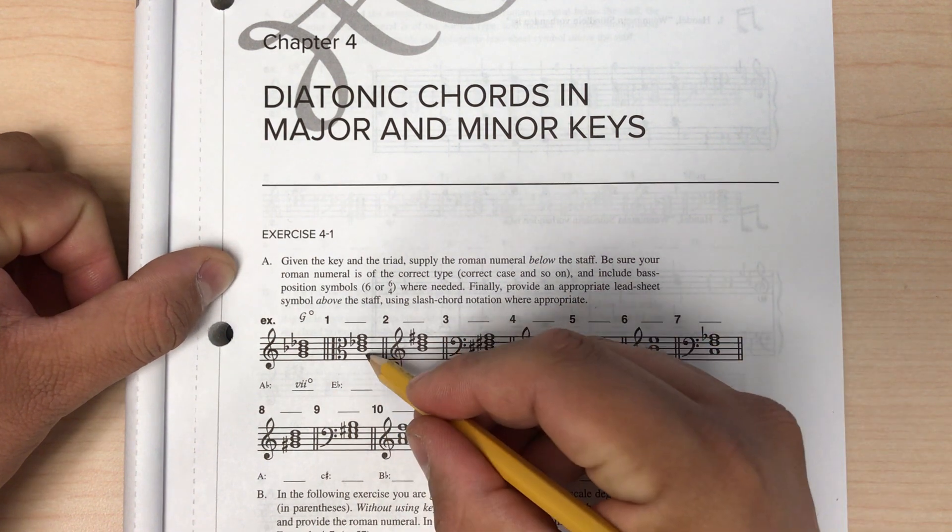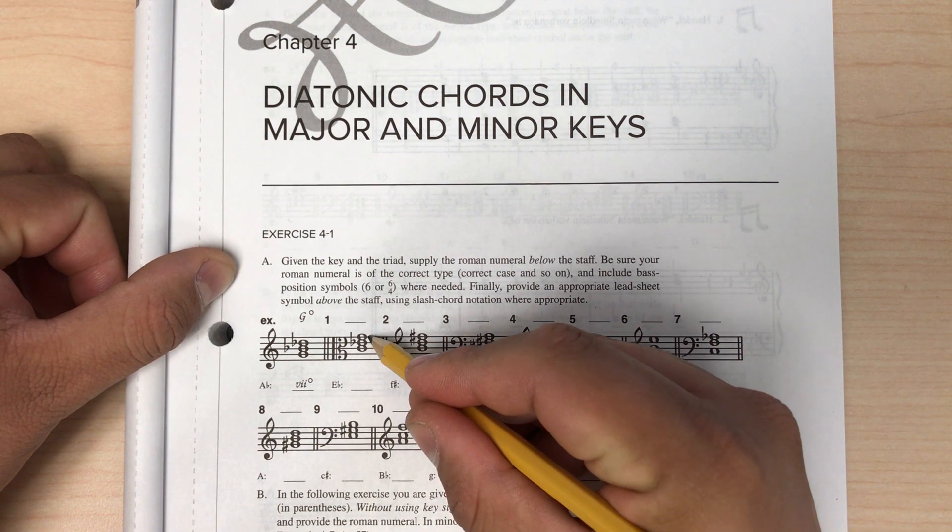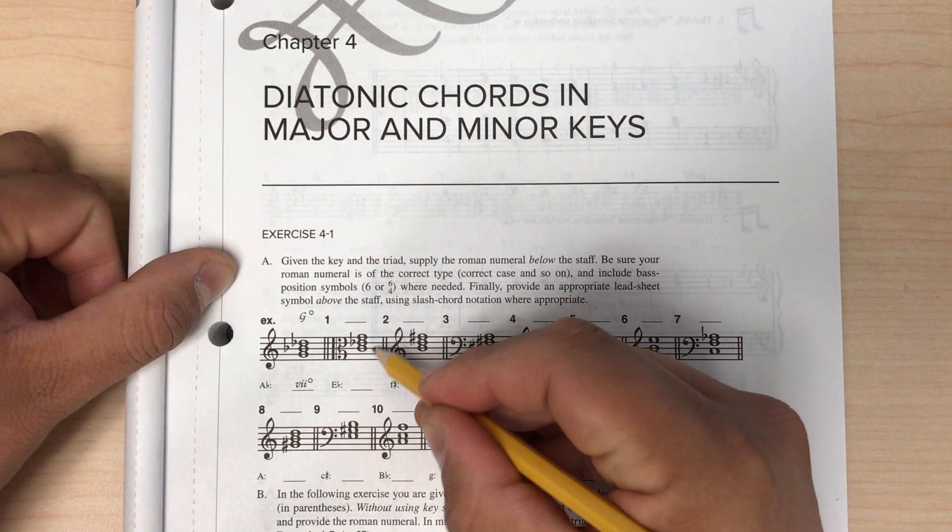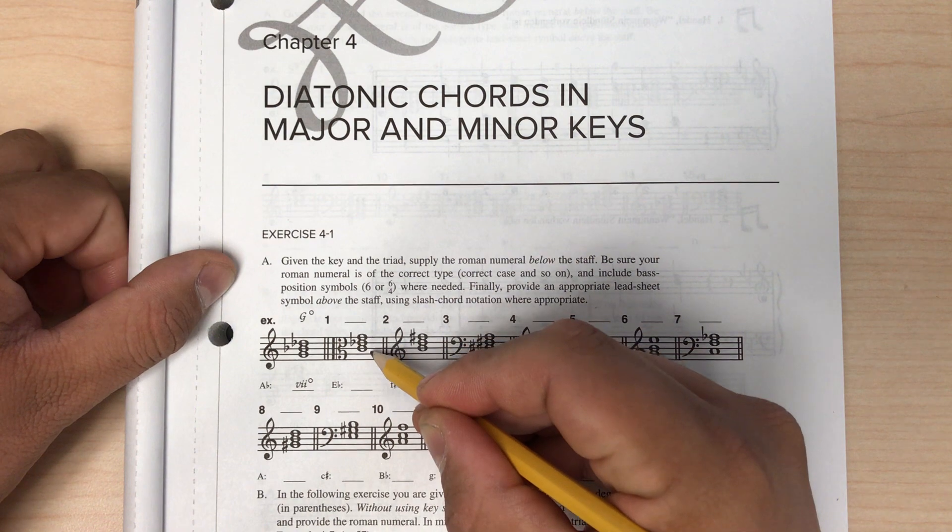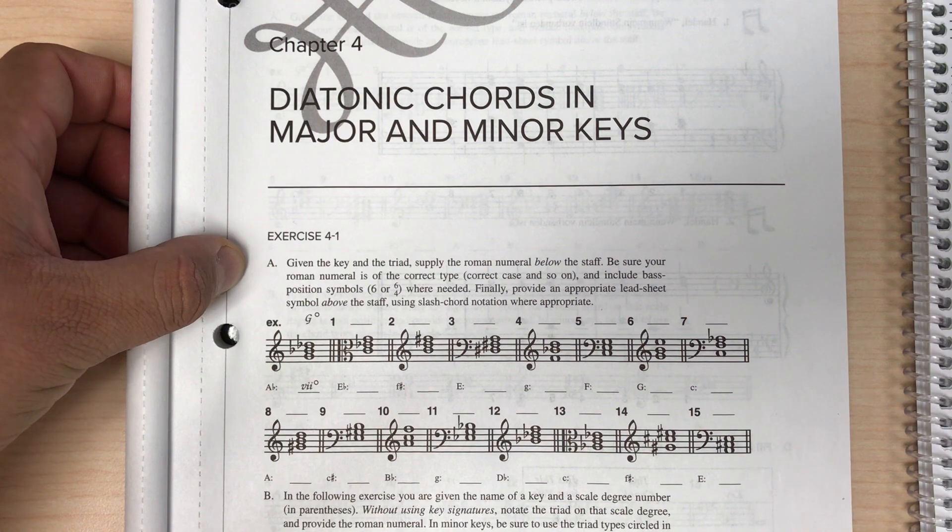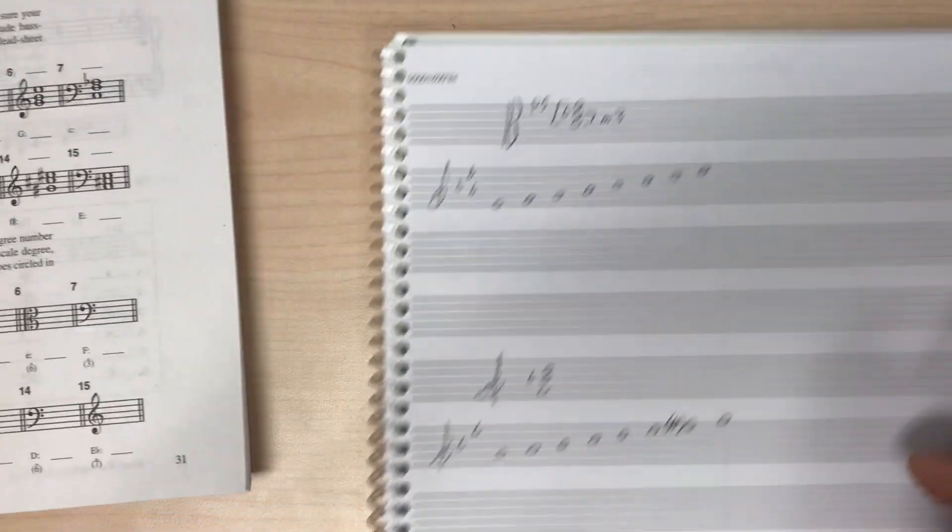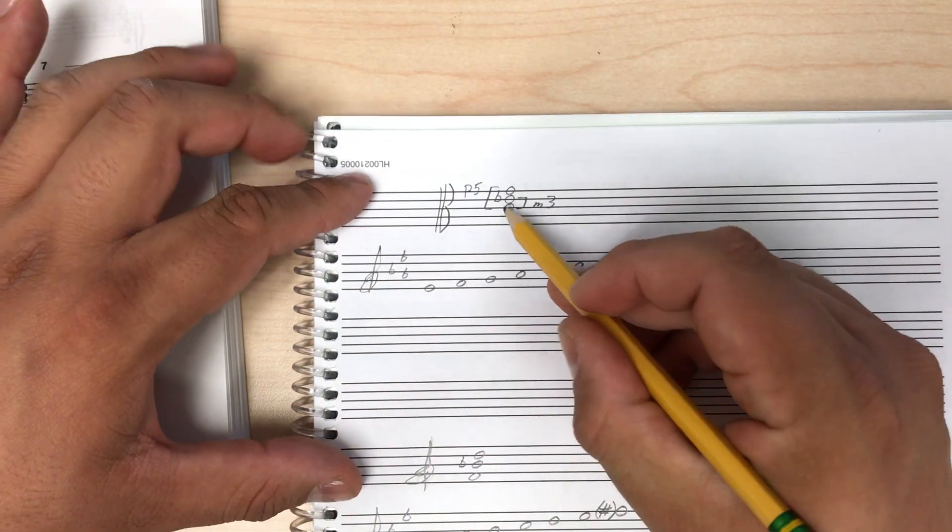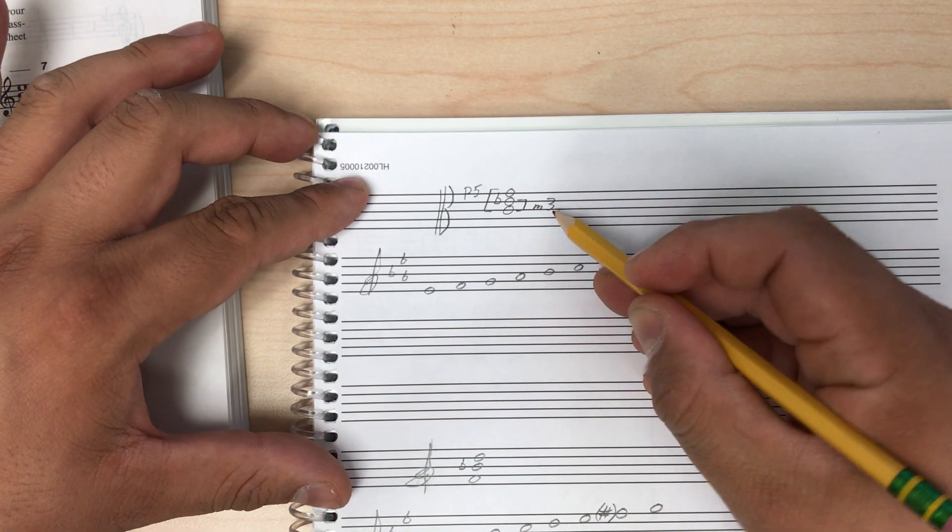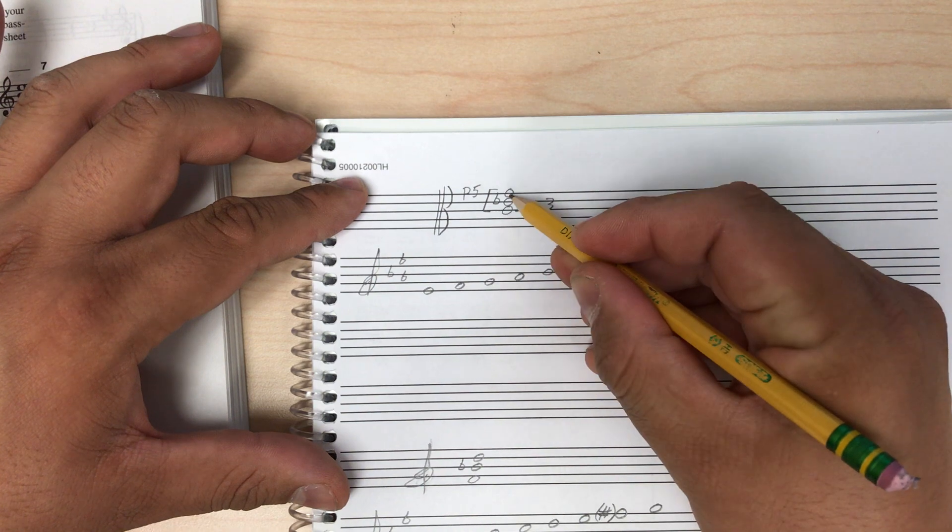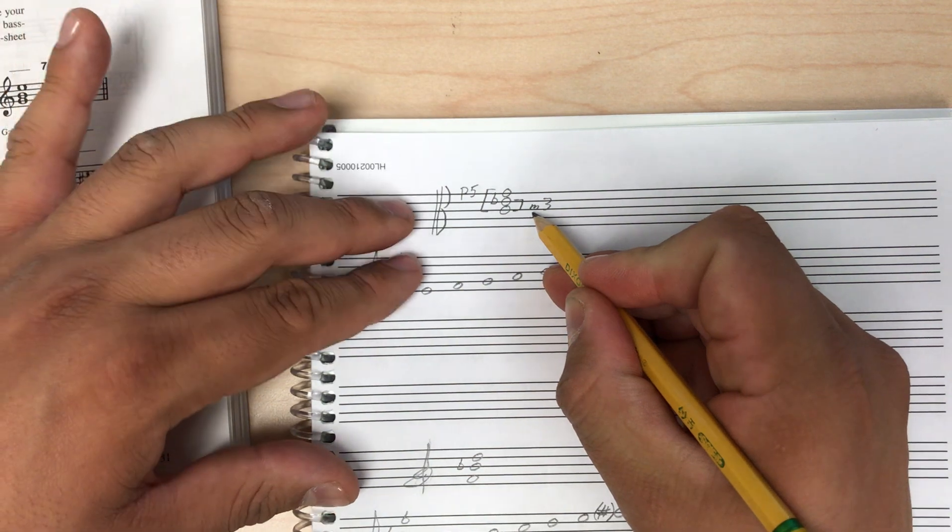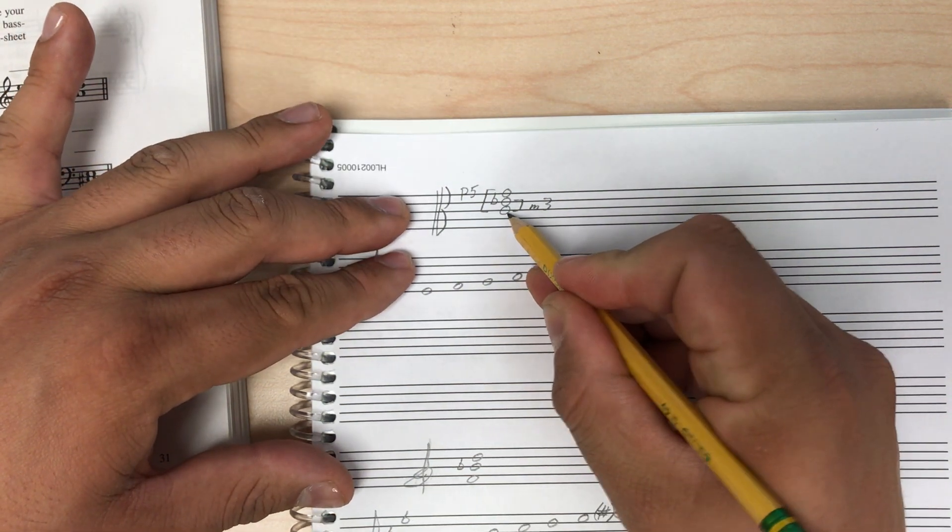Here we're in alto clef. We have a chord that is C, E flat, and G. We can see this is already in root position because it's stacked in a snowman, all stacked in thirds. So all we have to do to figure out what chord this is, is to look at what intervals are in the chord. Between C and E flat is a minor third. Between C and G is a perfect fifth.